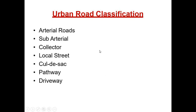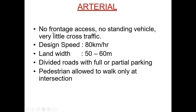Urban roads are classified as arterial roads, sub-arterial roads, collector streets, local streets, subway, and driveways. Arterial roads have no frontage access, no standing vehicles, and very little cross traffic. Design speed is 80 kilometers per hour and lane width is 50 to 60 meters. They are divided roads with full or partial access control, and pedestrians are allowed to walk only at intersections.